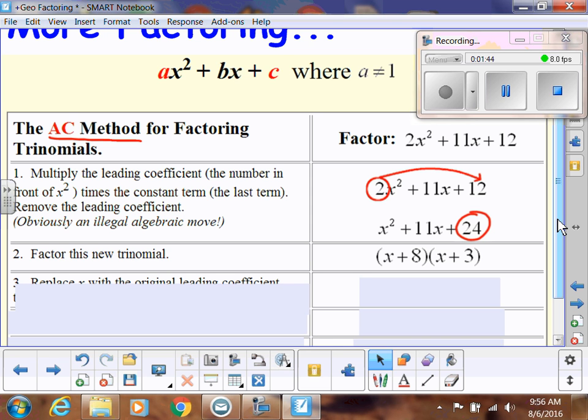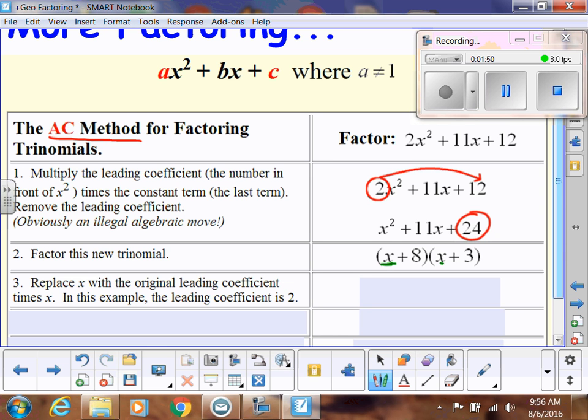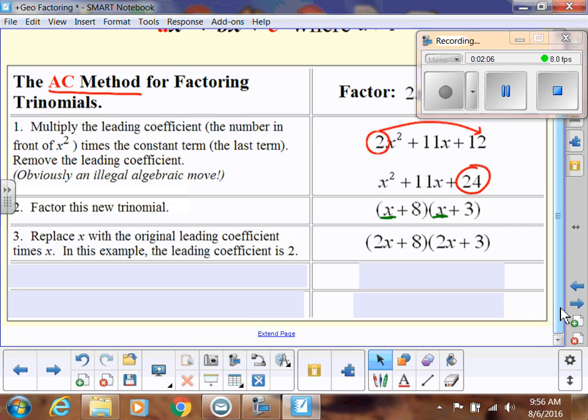Step 3: we're going to replace the x's with the original leading coefficient times x. In our example it was 2, so instead of x, we're going to put 2x in those spots. And again, this makes no sense until I show you why that works, but that's what you do.